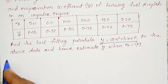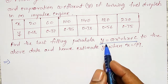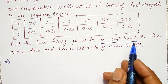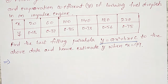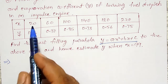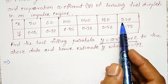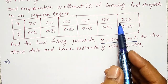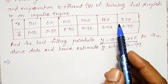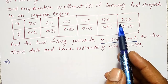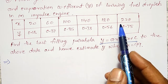To fit a parabola y = ax² + bx + c, we have the normal equations using summation x, x², x³, x⁴. But using these x values, computing x⁴ and all those things will become a little bit lengthy to calculate. For that, I will use the step deviation method.